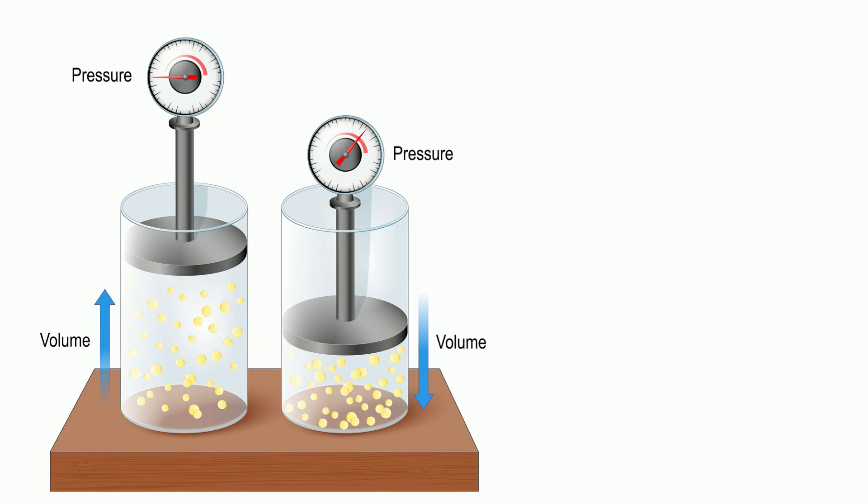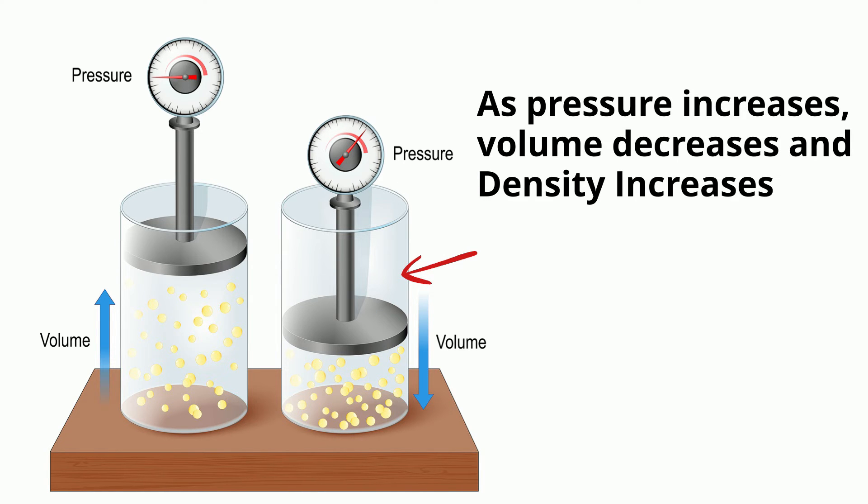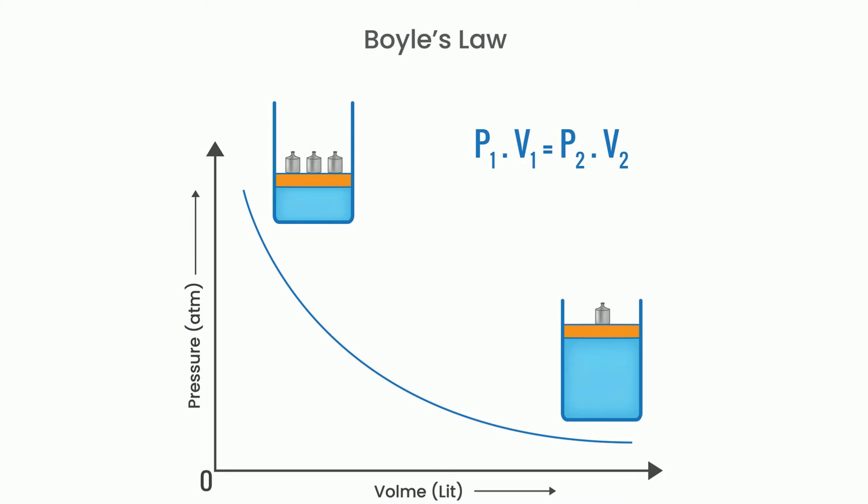On the other hand, as the pressure of a gas increases, the molecules are forced closer together and the gas contracts. This causes the gas's density to increase. Boyle's Law states that for a fixed amount of gas at a constant temperature, the volume of the gas is inversely related to the pressure. So, as pressure increases, volume decreases and the density of the gas will increase.